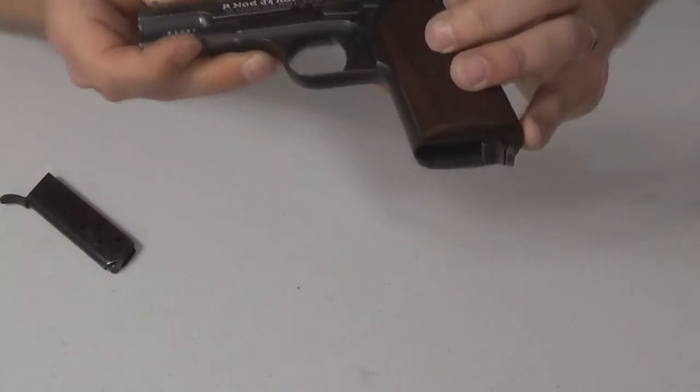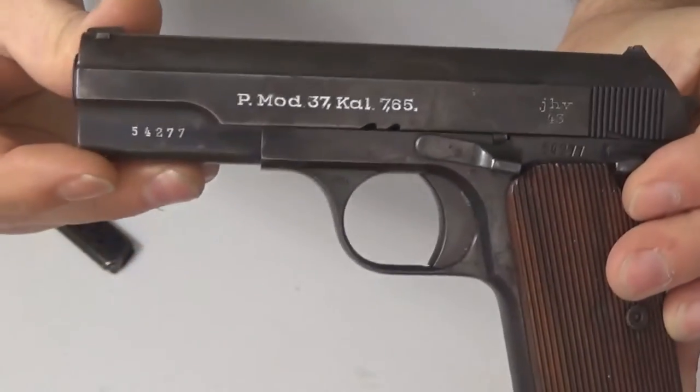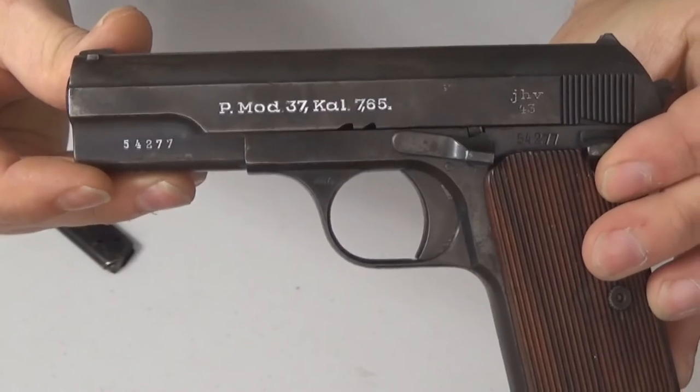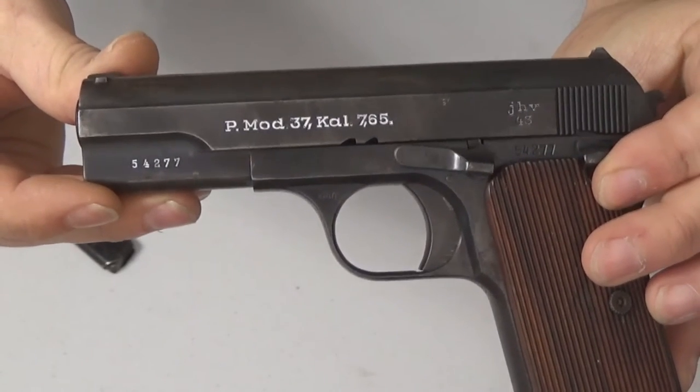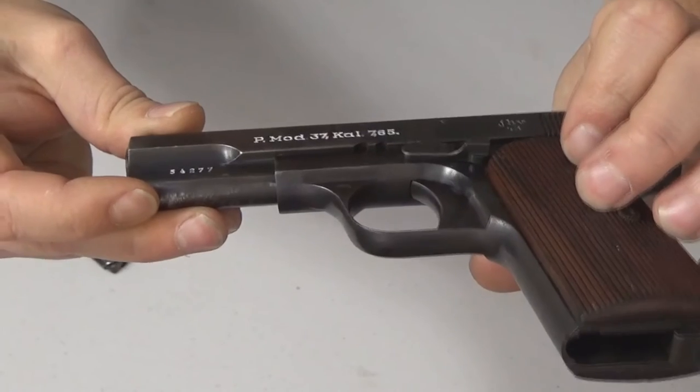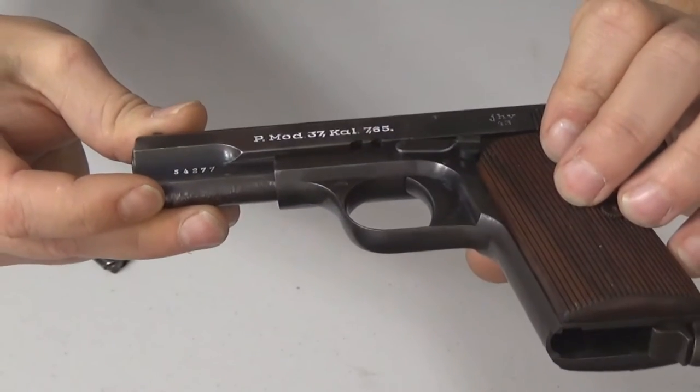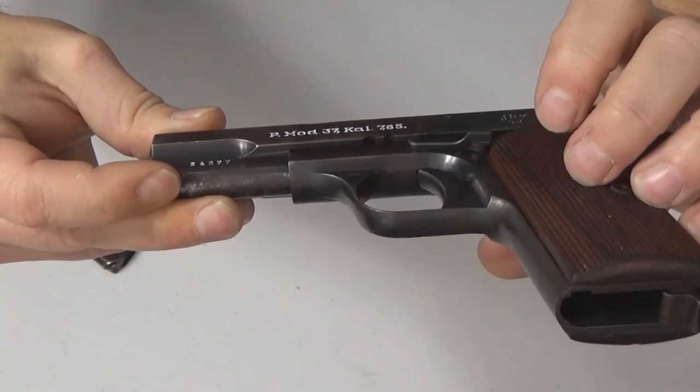We got 7.65 caliber and that is .32 caliber. I'm sorry, 7.65 millimeter equals .32 caliber. That is the Model 37.